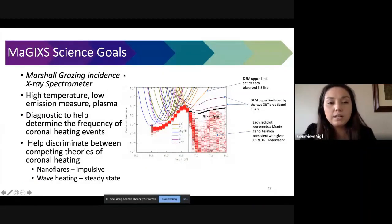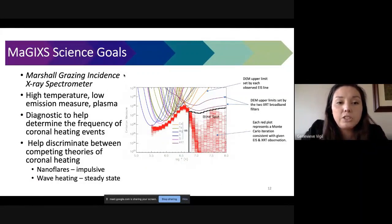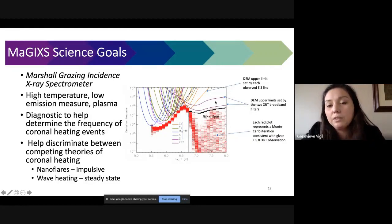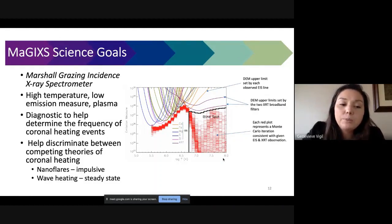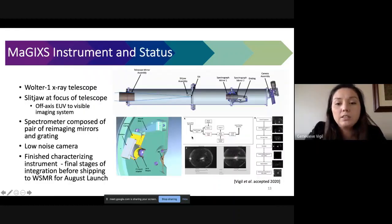Next I'll move on to some of our upcoming work. This is the MaGIXS or the Marshall Grazing Incidence X-ray Spectrometer. Our goal here in MaGIXS is to measure some high temperature but low emission measure plasma that can be seen in this blind spot here. We have several different instruments available to us like IRIS and XRT that give us X-ray spectra, but none of it is quite sensitive enough to measure this plasma that's high temperature and low emission measure. Ultimately what we're looking for is a diagnostic that can help us determine the frequency of coronal heating events. This will help us discriminate between competing theories of coronal heating, either impulsive nanoflare mechanisms or steady state wave heating mechanisms.